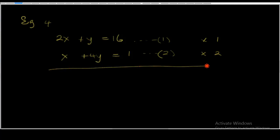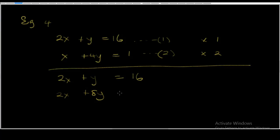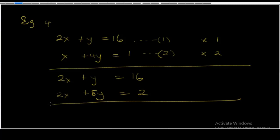Let's multiply them out. 2x times 1 gives 2x; 4y times 1 gives plus 4y; and 16 times 1 gives 16. Then x times 2 gives 2x; 4y times 2 gives plus 8y; and 1 times 2 gives 2. Now let's subtract equation 2 from equation 1 — the minus sign applies to all elements.